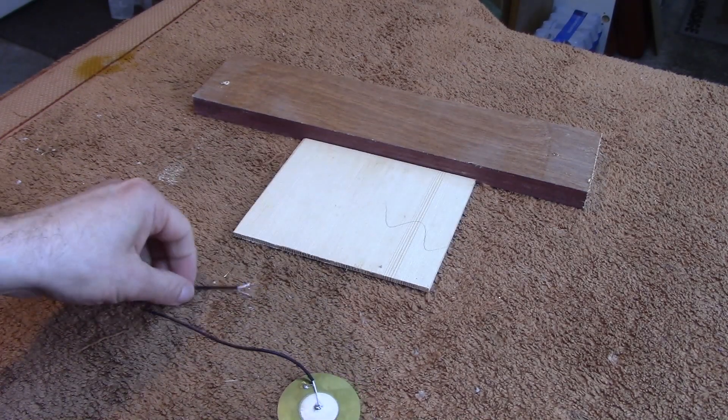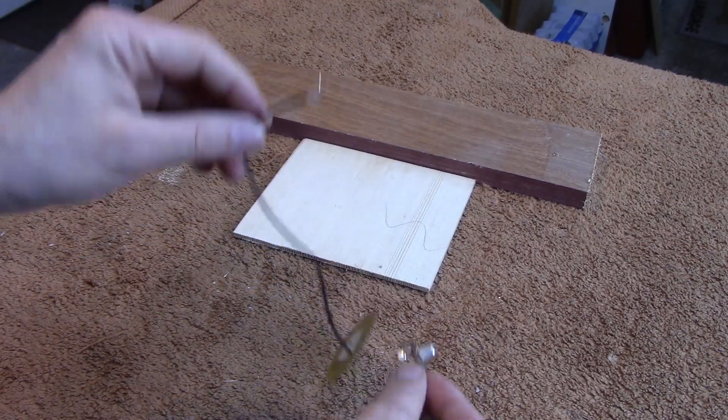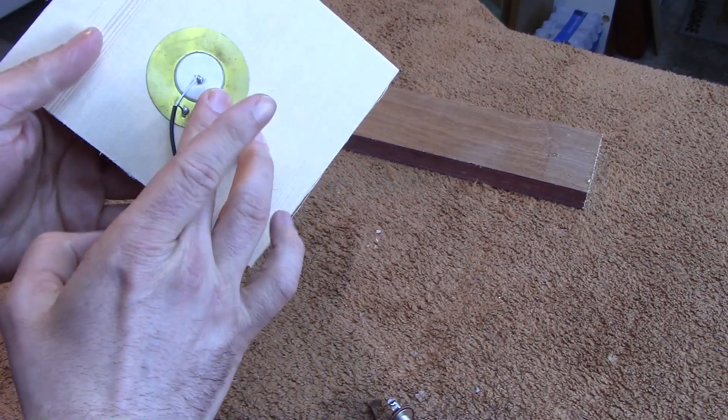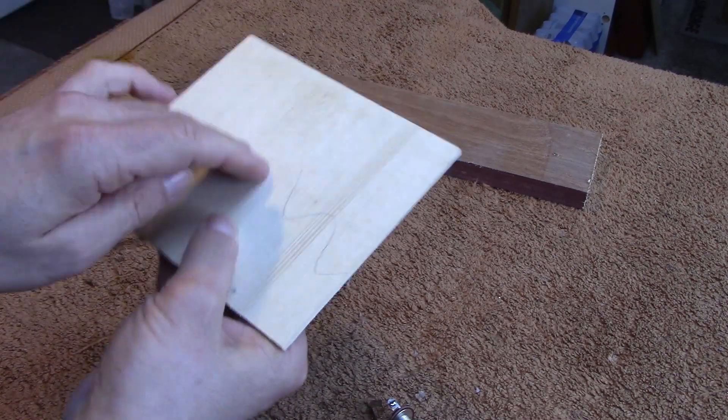So basically all we're going to do is we're just going to solder our piezo pickup here onto our output jack. We're going to stick it to the back of our piece of spruce here, probably with some hot glue. And that's going to be the surface that we tap on to get our percussive sound.